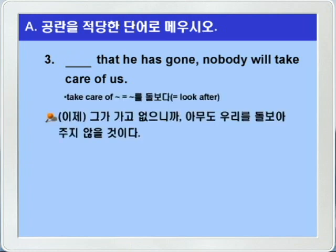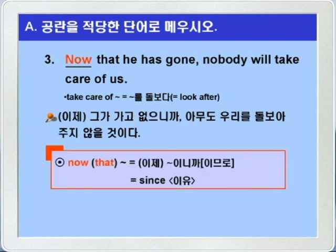3번입니다. Blank that he has gone. 그가 가버렸으니까, 다시 말해 그가 가고 없으니까. Nobody will take care of us. Take care of는 look after, 즉 뭐뭐를 돌보다 이런 뜻이니까, 아무도 우리를 돌봐주지 않을 것이다. 이런 의미가 되는데요. blank 다음에 that이 있으니까, 금방 답을 찾을 수 있을 겁니다. 정답이 뭐죠? 그렇죠? now가 들어가면 되겠습니다.